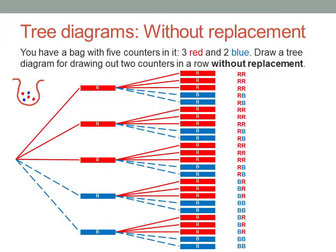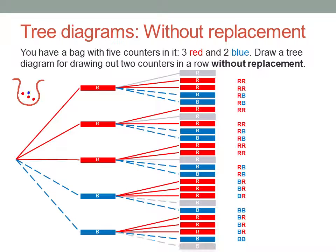But what happens if instead you don't put the first counter back in before you pull out the second? Now you're working without replacement. Look carefully at the tree diagram. If the first counter was the first red one, that counter is no longer available for the second draw — there are now only four possible options for the second counter: two reds and two blues. The same applies for the second and third red counters. And if the first draw is a blue counter, then the one you drew out is no longer available for the second draw.